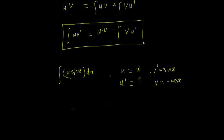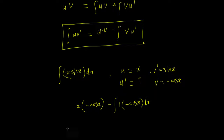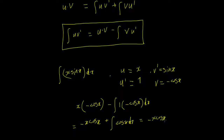Then we write the first part as u times v, which is x times (−cos x), minus the integral of 1 times (−cos x) dx. This equals minus x·cos(x) plus the integral of cos(x) dx, and at the end we add our constant of integration c.